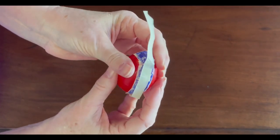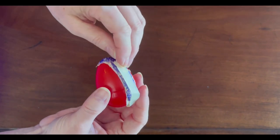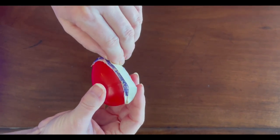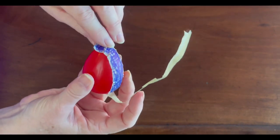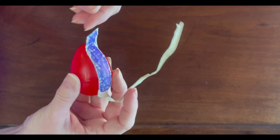But in testicular torsion, when you have a bell clapper deformity predisposing to testicular torsion, the epididymis does not cover the head of the testis. It's ectopic in location, and it also does not extend so firmly over the tail of the epididymis.